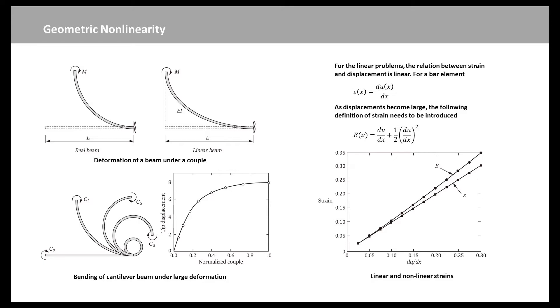Due to this high-order term, the relation between displacement and the strain becomes nonlinear. From the figure of linear and nonlinear strain, the difference between the two strains becomes larger as the magnitude of strain increases. For example, at 5% strain, the error between the two strains is 2.5%, while the error becomes 15% at 30% strain.